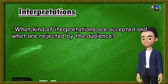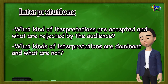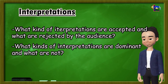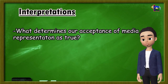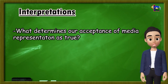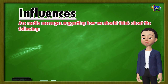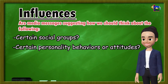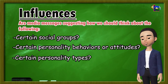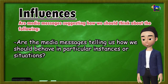What kinds of interpretations are accepted and what are rejected by the audience? What kinds of interpretations are dominant and what are not? What determines the authenticity of our acceptance of these interpretations? What determines our acceptance of media representation as true? Are the media suggesting how we should think about certain social groups? Are the media messages telling us how we should behave in particular instances or situations?